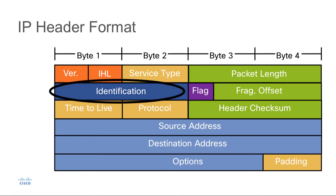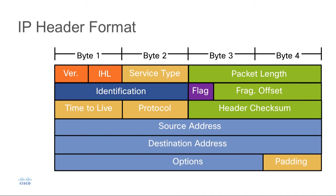This is followed by the identification field, the flags field, and the fragment offset field. When passing an IP packet throughout a network, it might go through different devices that can't handle the size of the packet, in which case the packet will need to be fragmented — divided into smaller chunks that can be collected and reassembled later. We use these three fields to mark the packets as fragments, and then use the identification, flags, and fragment offset fields to reassemble those packets at the destination.